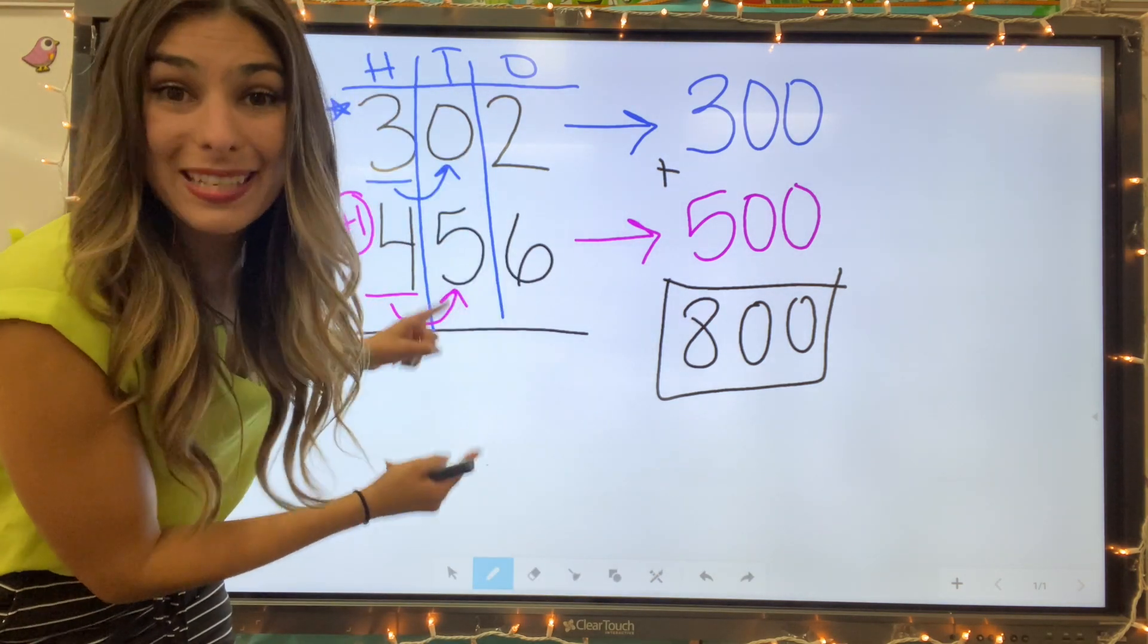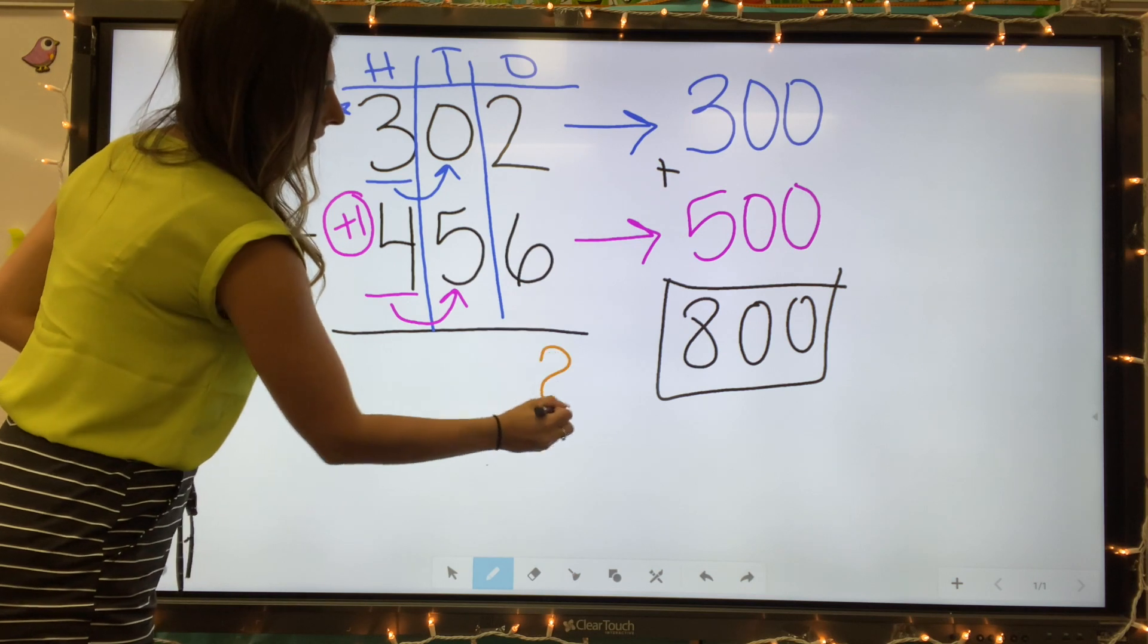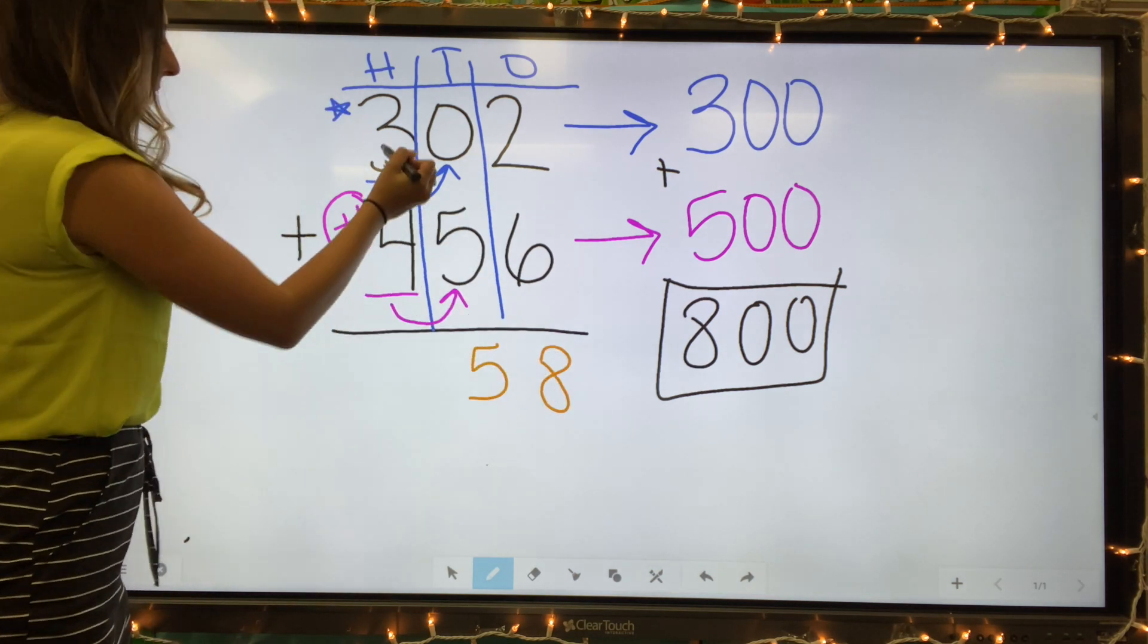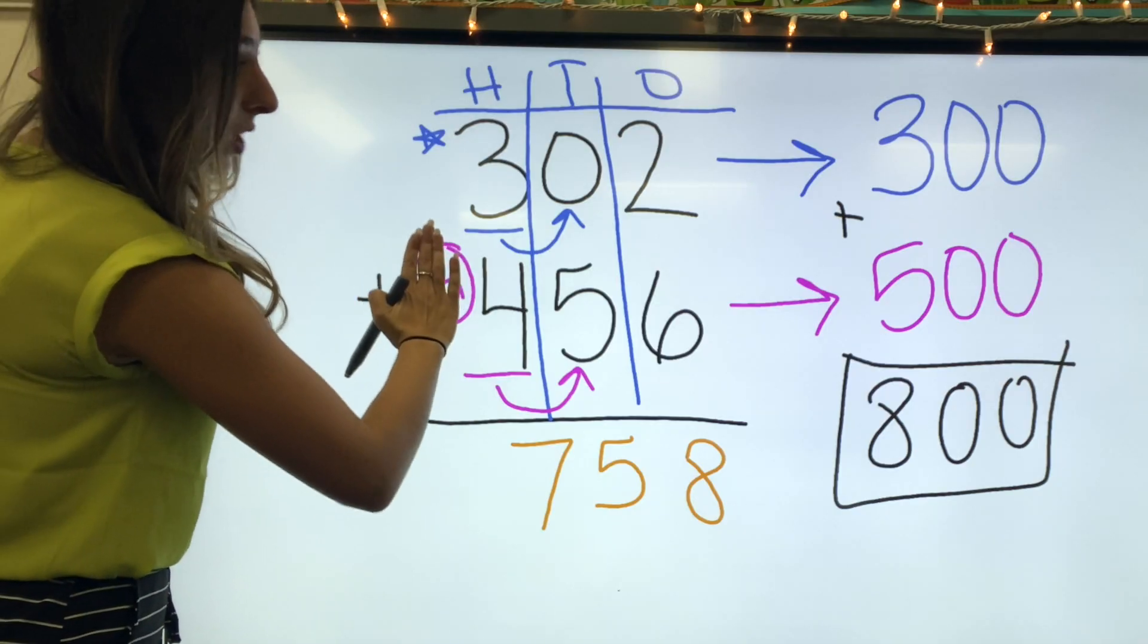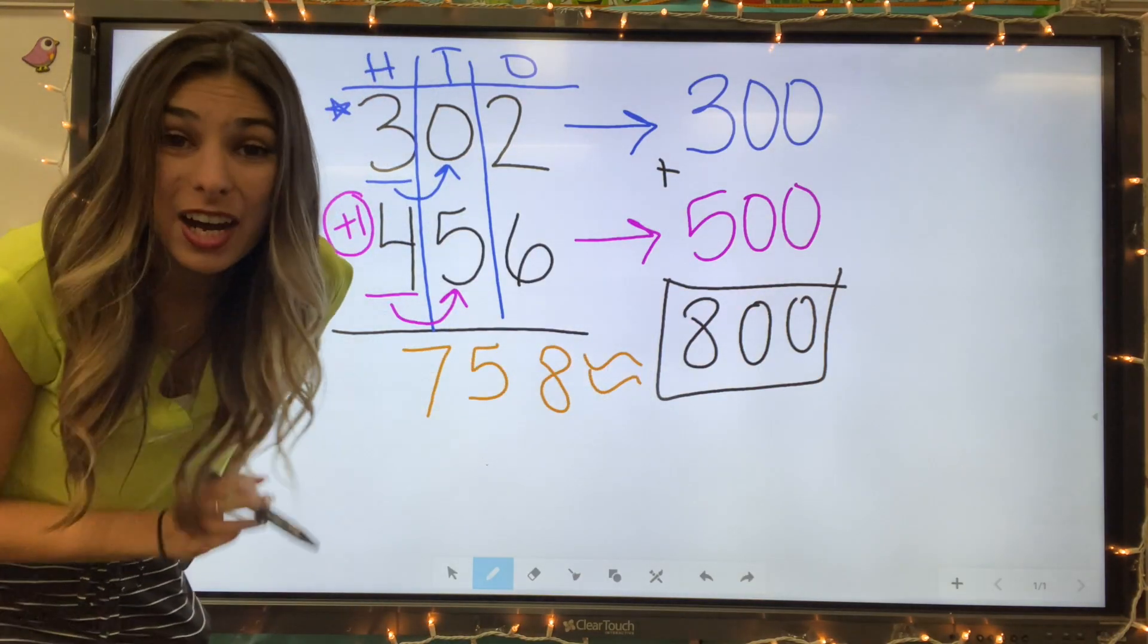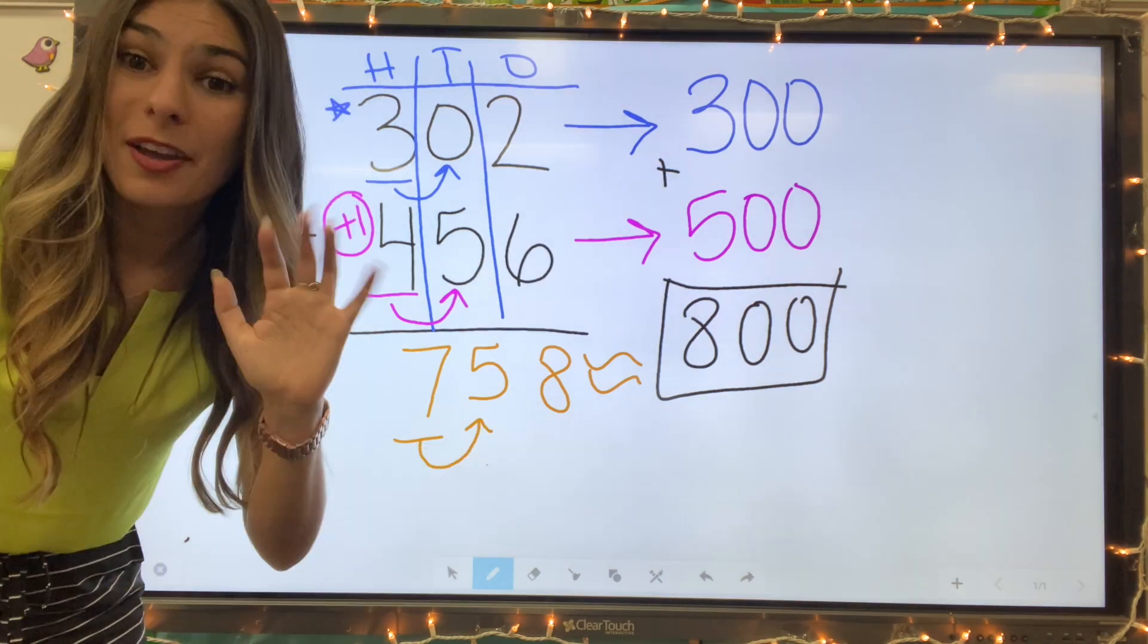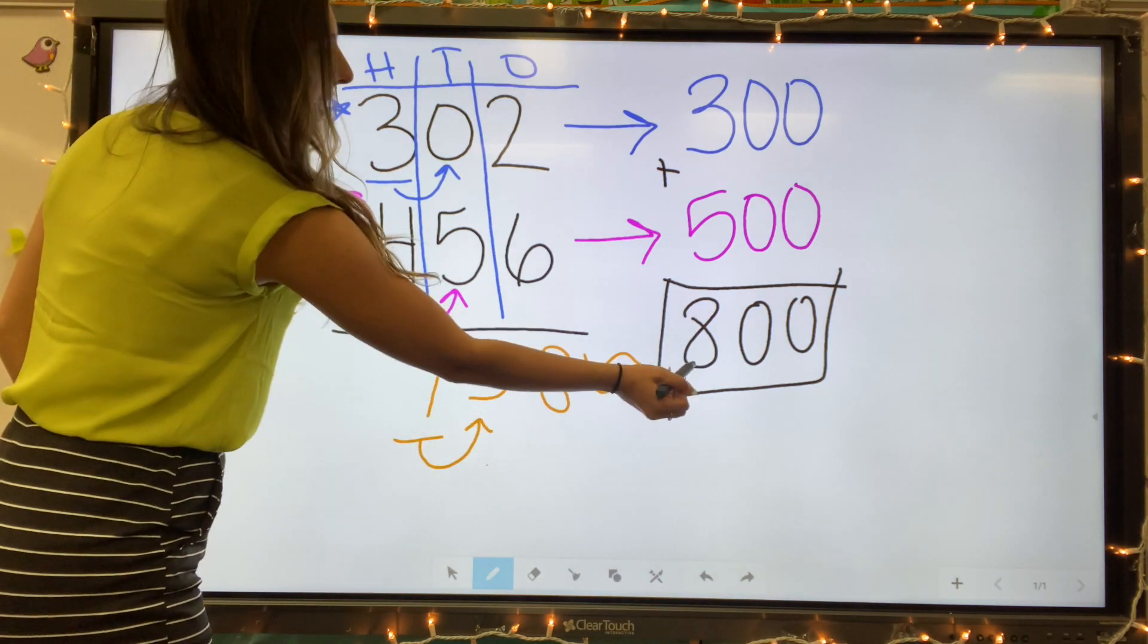So let's add this one up and double check our work. Start with our ones. We have two plus six. That equals eight. Zero plus five equals five. Three plus four equals seven. This added one goes for there, not for this normal adding. 758 is about 800. We would round up because that five, five or greater, add one more. This is why we rounded to 800.